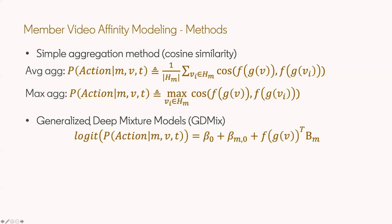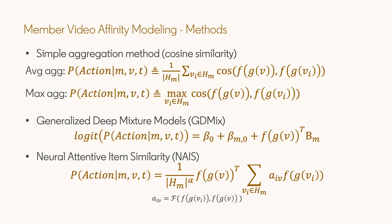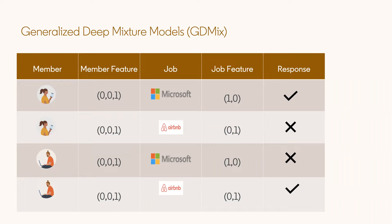We can also generalize that into a deep layer implementation, which is called the GD mix model — that is, we use deep layers to compute each effect. Another method in the literature is called NAIS, the neural attentive item similarity. In this method, we estimate MVA by a weighted summation of cosine similarity between the video embeddings in the member history and the video embeddings of the test video. There is a particular term called the attention weight, which is computed by an attentive layer with the input of two video embeddings.